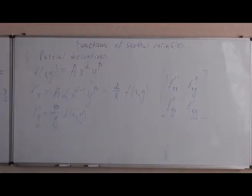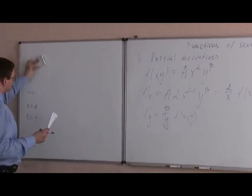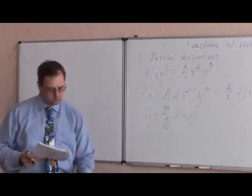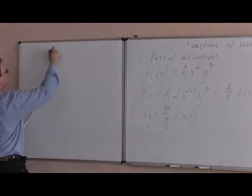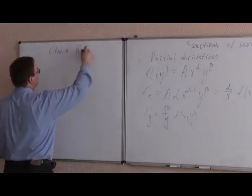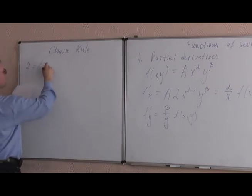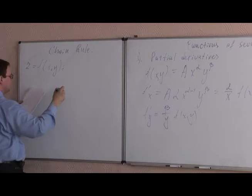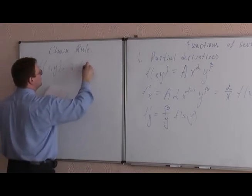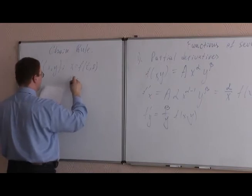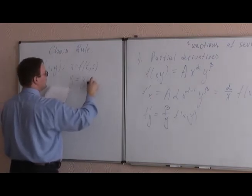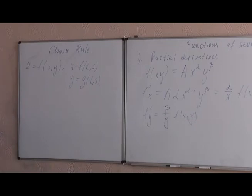Then you also have to understand the concept of the chain rule for the function of multiple variables as well. So if z is some function of x and y, and we know that x is the function of t and s, and y is some other function of t and s, then how can we find dz over dt, for example?